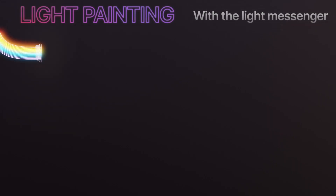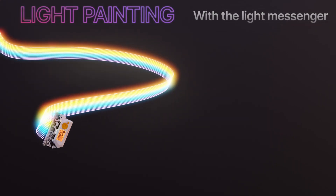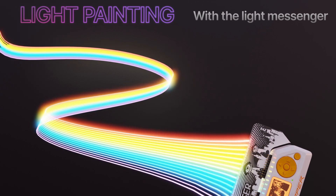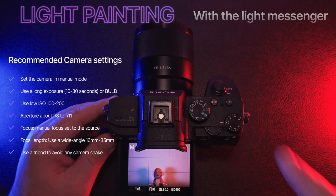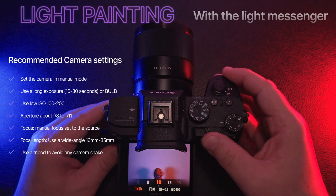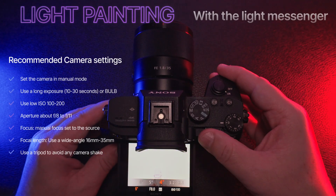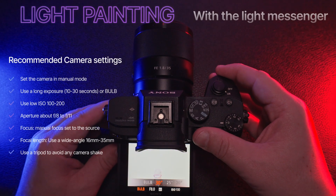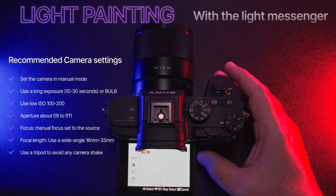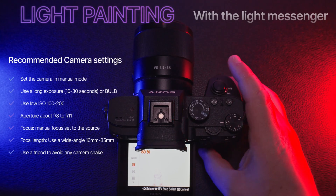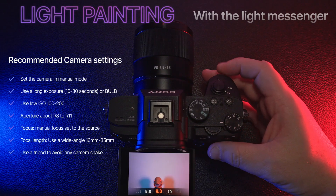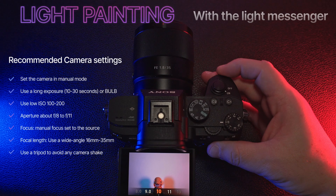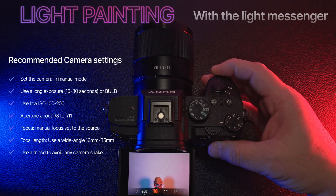Light painting with the Light Messenger. Here's a quick guide to the best camera settings. First, switch your camera to manual mode. Next, set a long exposure between 10 to 30 seconds to clearly capture the light trails. Keep your ISO low, around 100 to 200, for a clean noise-free image. Use an aperture between F8 and F11 to keep your shot sharp and in focus.